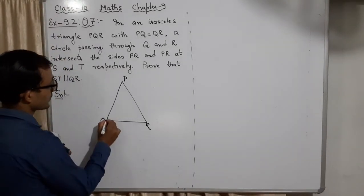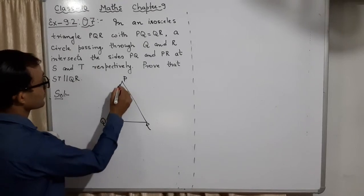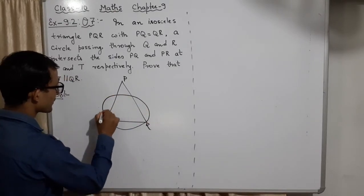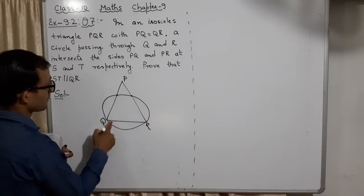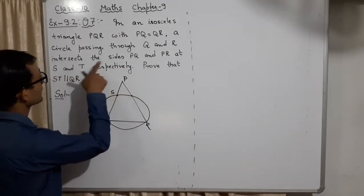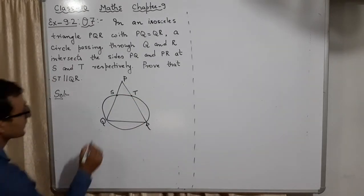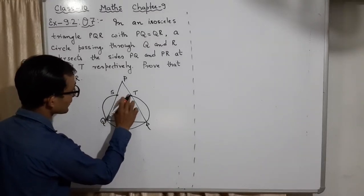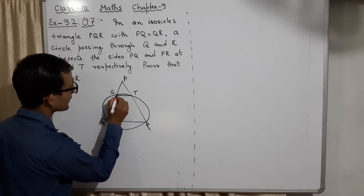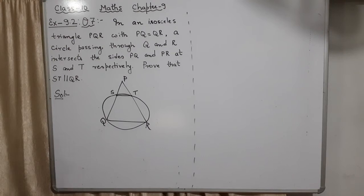So there is a circle passing through Q and R, intersecting side PQ at S and side PR at T. ST is a line, and this line ST is parallel to QR — you have to prove it.